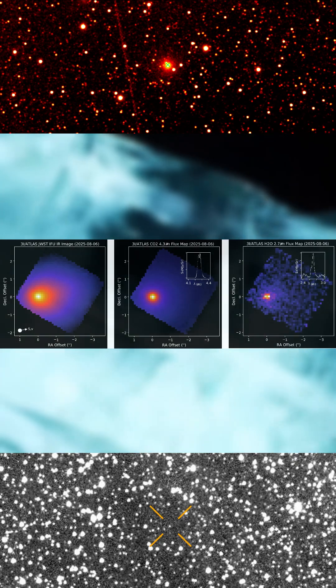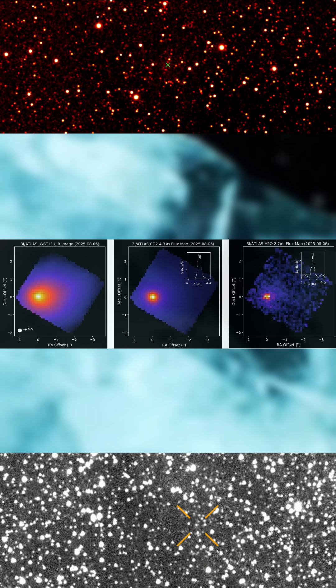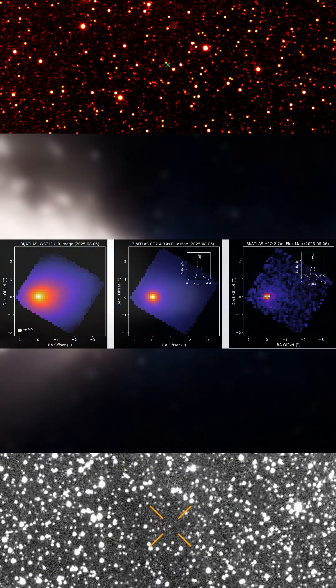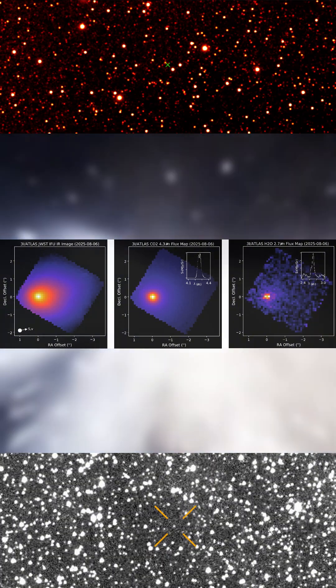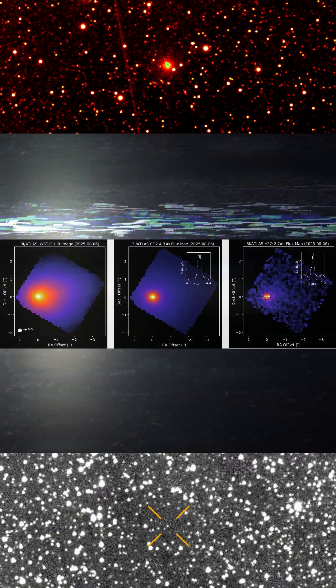The dust distribution adds another difference. A bright sunward plume was observed, while the gases spread more evenly around the nucleus. This shows carbon dioxide, not water, is driving the release of dust.